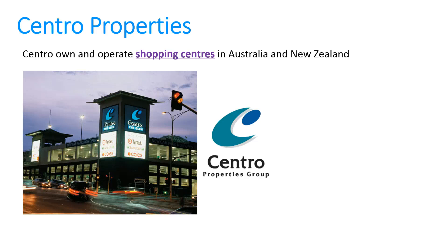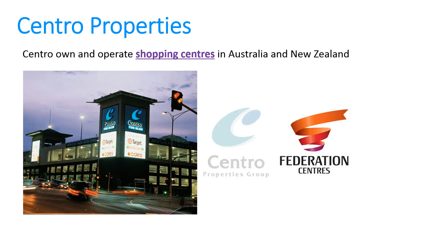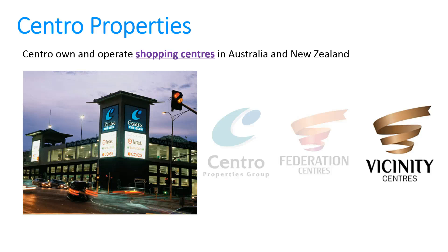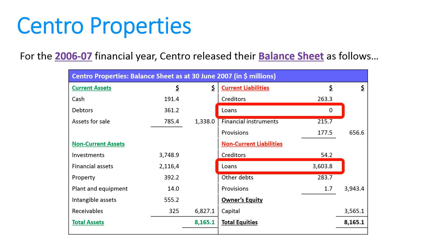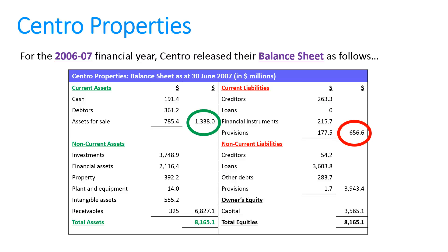Let's look at a real-world example: Centro Properties, who own shopping centres in Australia and New Zealand. They've since changed their name to Federation Centres and then Vicinity Centres. The issue is their 2006-07 balance sheet. It's set out just like we do ours in Year 12, and in particular, there are no loans listed as current — as due within the next 12 months — but under non-current the loans are valued at about $3.6 billion. Based on that, it looks like they have plenty of current assets to cover current liabilities.